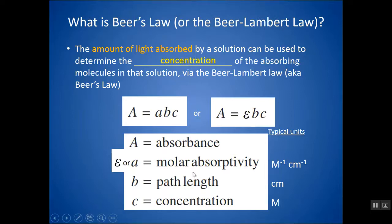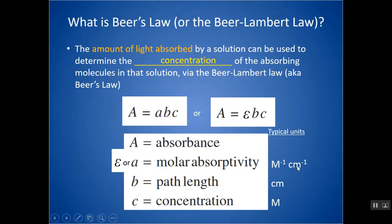B is something called path length — it is basically the distance that the light has to travel through the sample. Typically you're using a test tube that has a one centimeter path length, but it depends on the container. In an experiment, that's typically held constant. C stands for concentration. Typical units: path length is centimeters, concentration might be molarity, and your constant would have units of inverse molarity inverse centimeters, so they cancel out and give you absorbance, which is a unitless number.